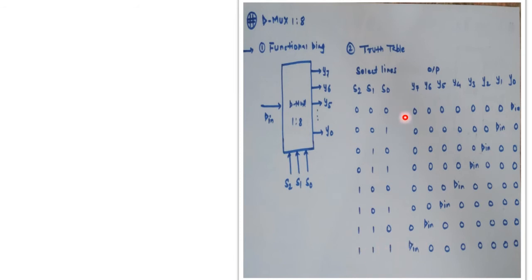In this case the input line din will be connected across output line number 7. So based upon that, in any of the conditions one input line is connected to one of the output combinations and all others will be disabled.